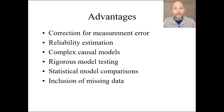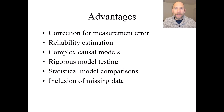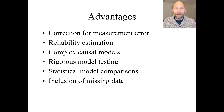One positive aspect of structural equation modeling and factor analysis is that it is very easy to include missing data in the analysis. We typically use maximum likelihood estimation for continuous variables, and with maximum likelihood we can use full information maximum likelihood with missing data, where all available data can be included. We don't have to use multiple imputation or other methods for addressing missing data. We can include auxiliary variables correlated with missing scores or outcome variables, making it very easy to handle missing data in SEM.